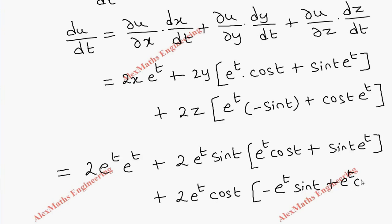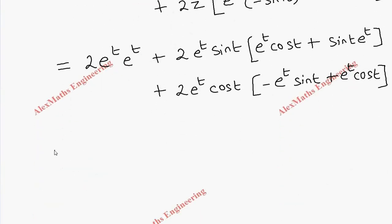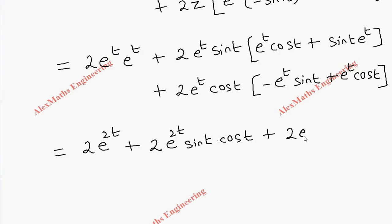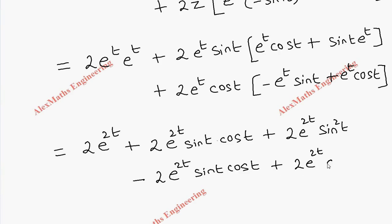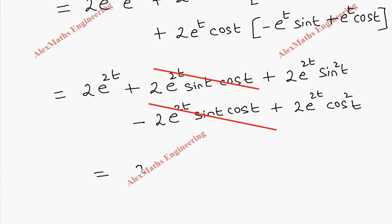Then plus z is 2 e power t into cos t, bracket open, minus e power t sin t plus e power t cos t, bracket close. Now we multiply the entire term inside: 2 e power 2t cos t. The last term gives 2 e power t into cos square t. We can cancel 2 e power t sin t cos t minus 2 e power t sin t cos t. After cancelling, we take 2 e power 2t common from the remaining terms.